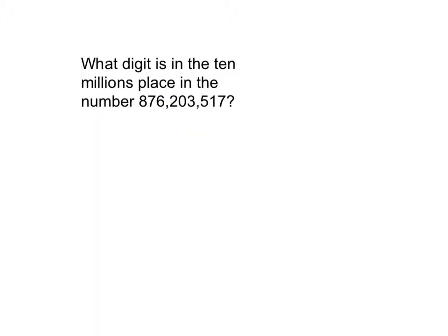For this question, it asks what digit is in the 10,000,000 place in the number 876,203,517. And so the digit that is in the 10,000,000 place is a what? It's a 7. That number is 876,203,517. And the digit that is in the 10,000,000 place is a 7.